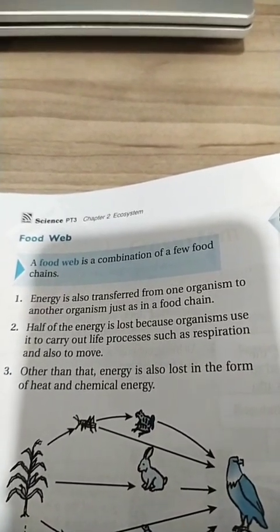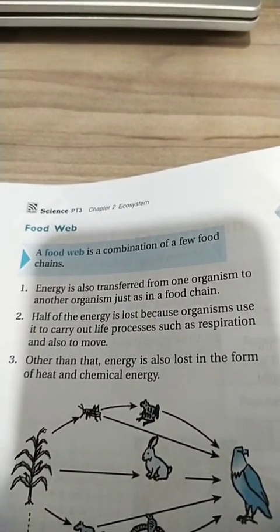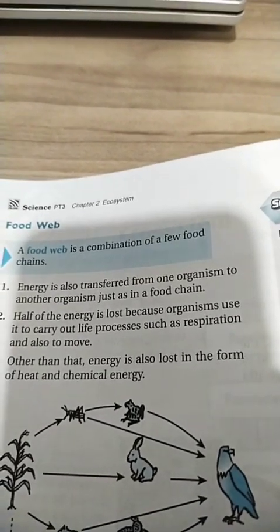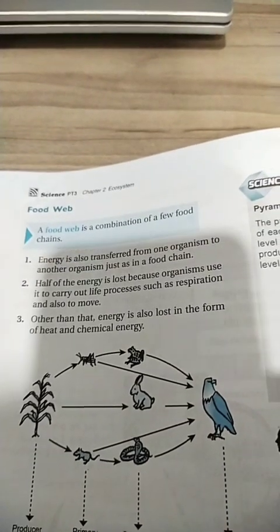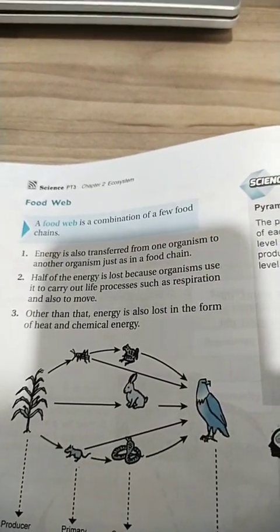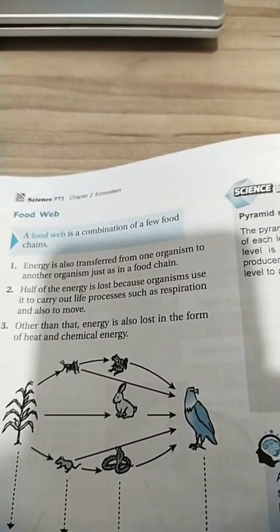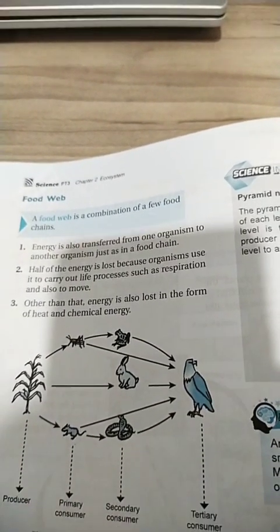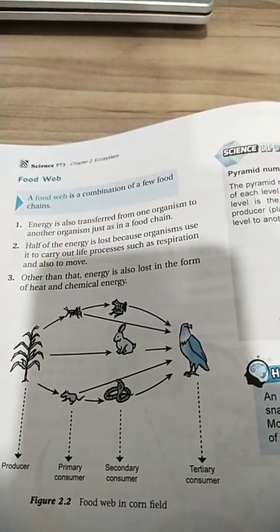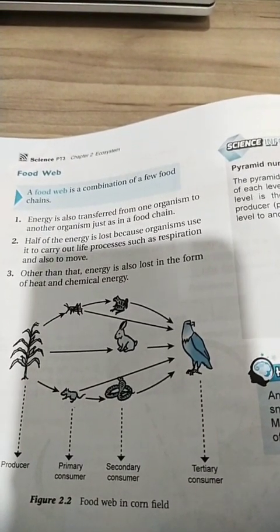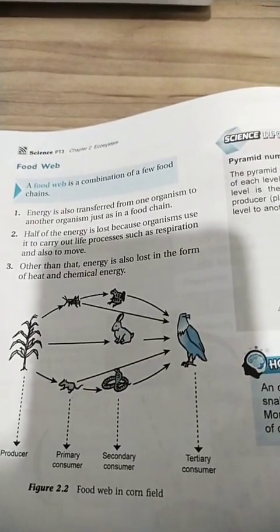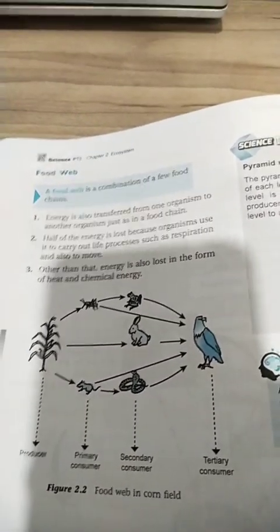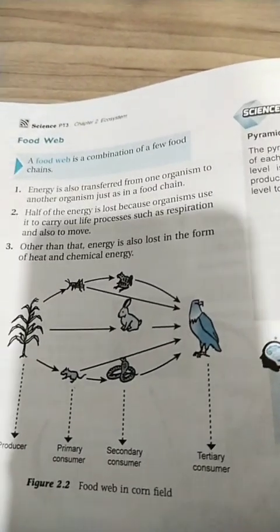Half of the energy is lost because organisms use it to carry out life processes such as respiration and also to move. Other than that, energy is also lost in the form of heat and chemical energy.